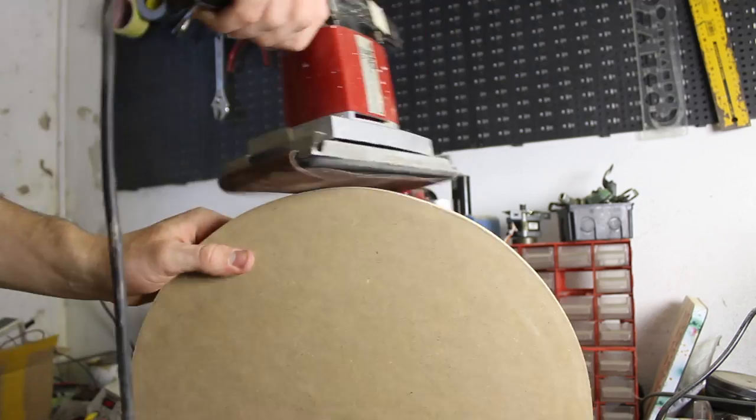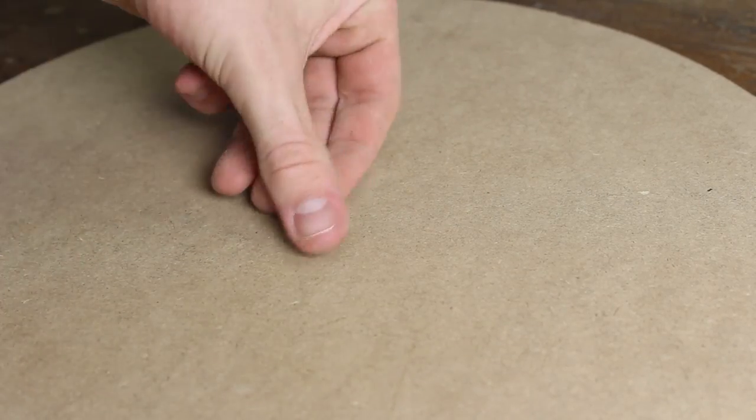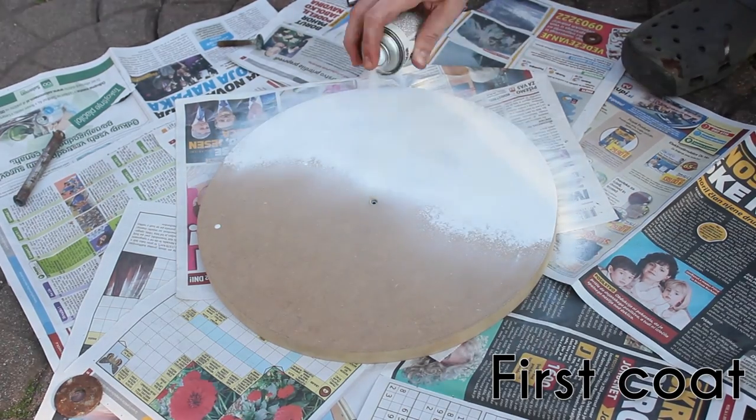With the help of a vibrating sander I smooth the edges and try to make them again as round as possible. After drilling a bit bigger hole for the screw I used an acrylic white paint to cover the whole surface of our rotary table.